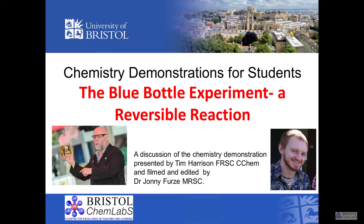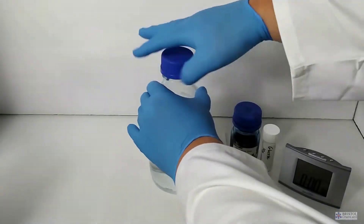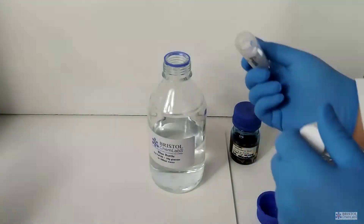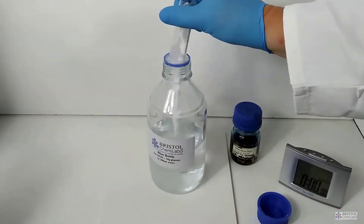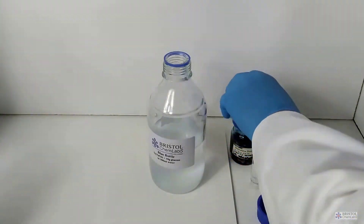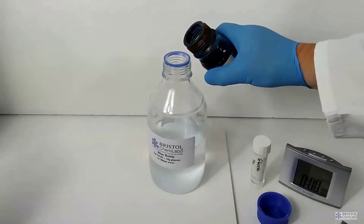In another simple experiment, the blue bottle experiment, we're going to investigate, firstly, the structural formula of a methylene blue molecule, as it's a little complex, and the nature of the simple reversible reaction in terms of reduction and oxidation. To set up a methylene blue bottle, you simply add some methylene blue indicator, which is already dissolved in alcohol, into sodium hydroxide solution, to which has been added some glucose.